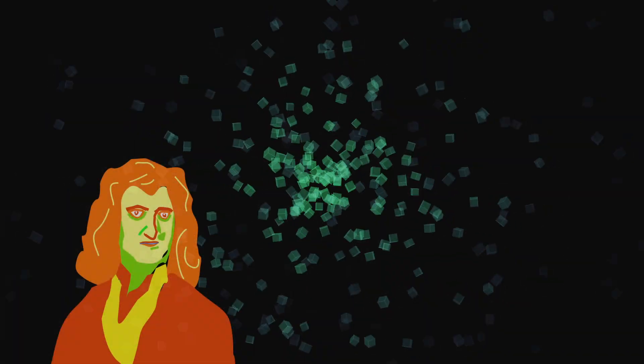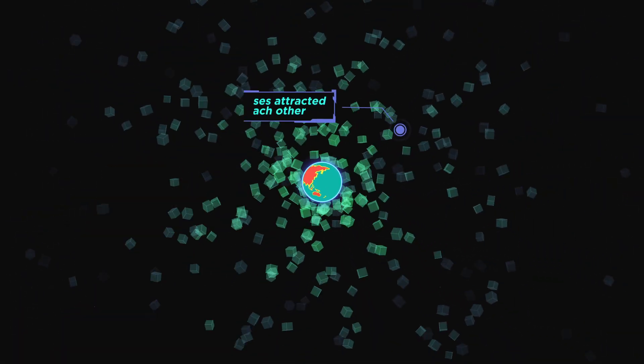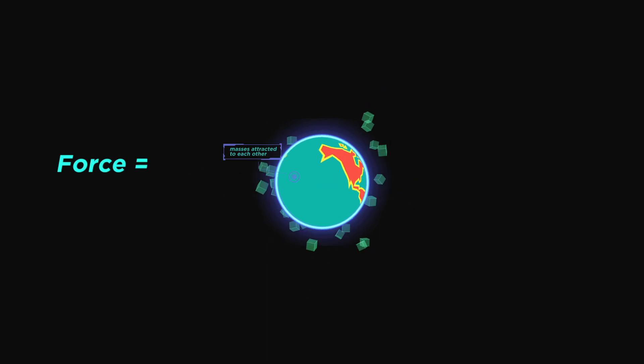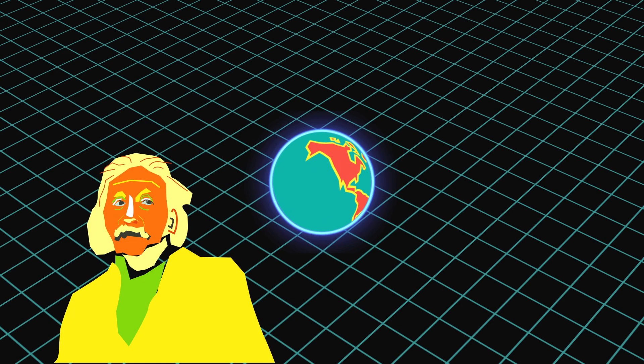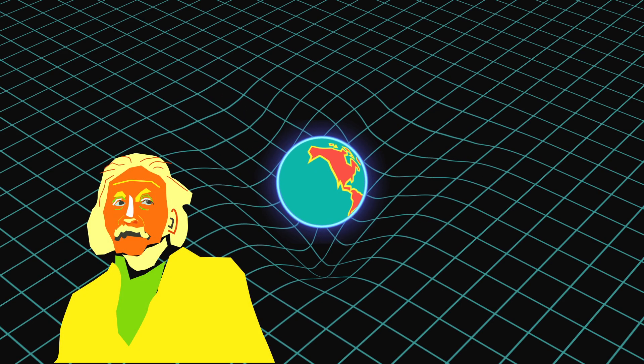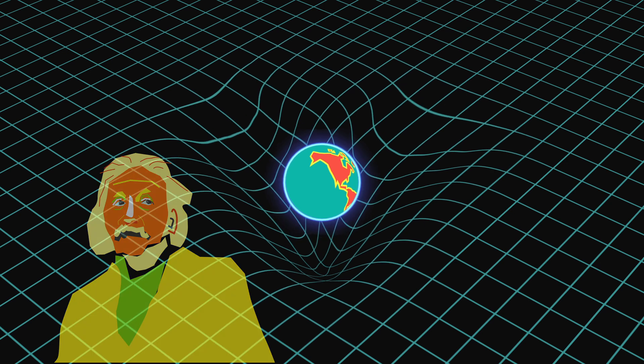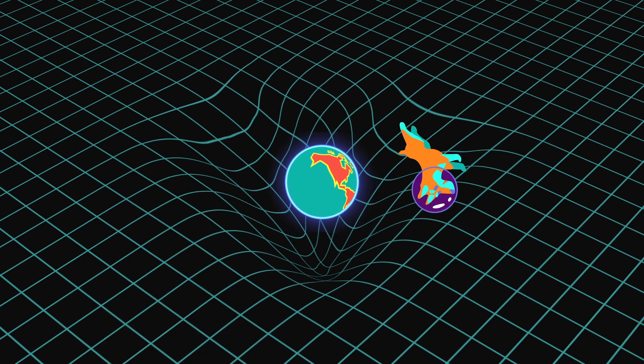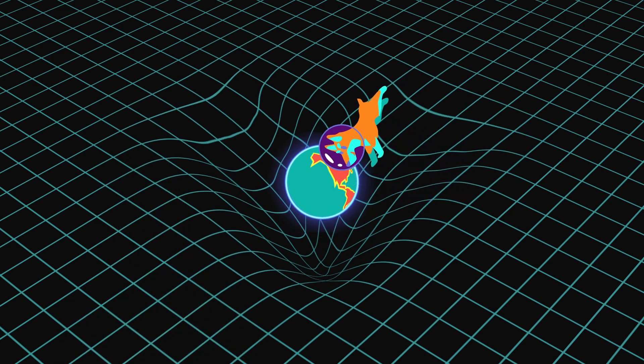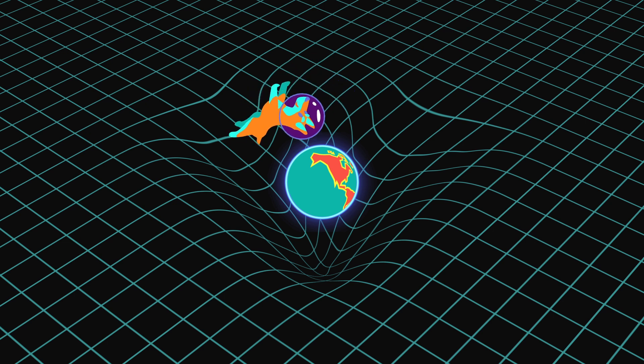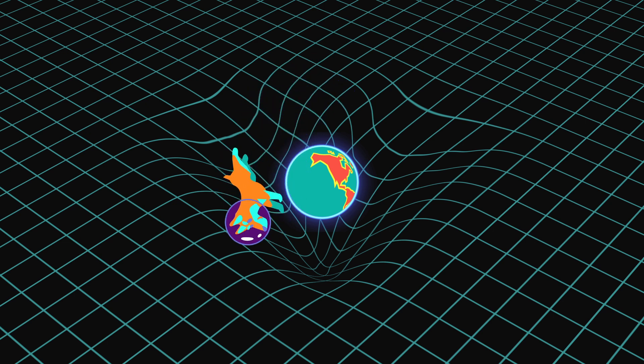We're so used to thinking of gravity as something that pushes us to the ground because it's so simple and obvious. Newton represented gravitation as a force of attraction whose strength depends on the mass of an object. Einstein, in his attempt to explain how gravity worked, showed how it's a curvature of space-time, and matter is only traveling along those curves in space. There weren't any forces. So how did Einstein end up disagreeing with Newton, saying gravity isn't a force?